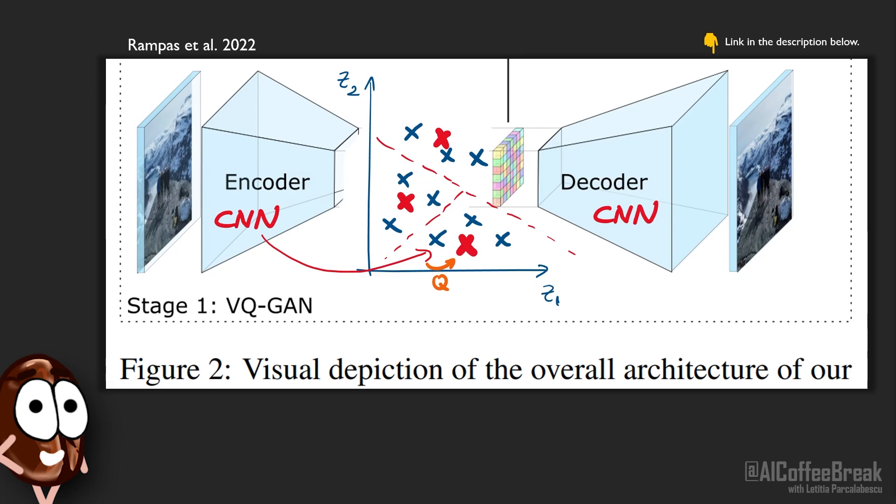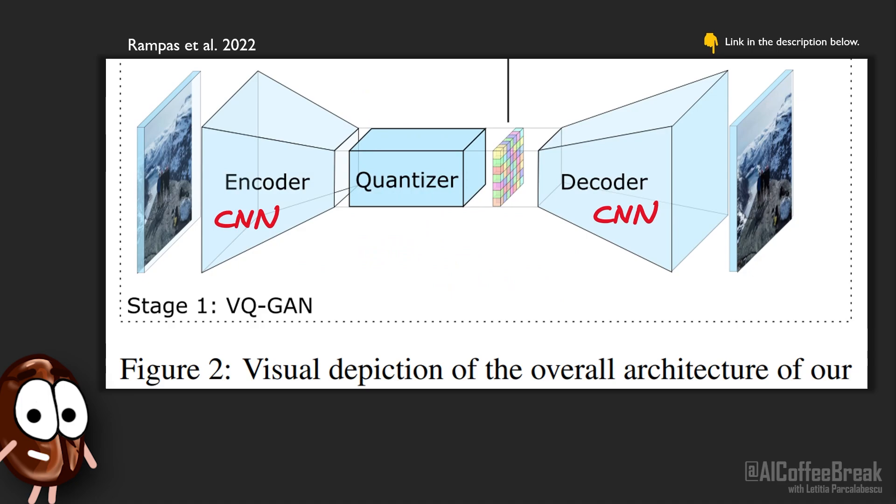You can think of the VQGAN as of an autoencoder that also learns to cluster the data with nearest neighbors and represent it with the centroids of the cluster. In the training procedure of the VQGAN, the objective is to reconstruct images. To successfully do so, we learn the encoder weights, the decoder weights, and what the optimal entries of this codebook are.